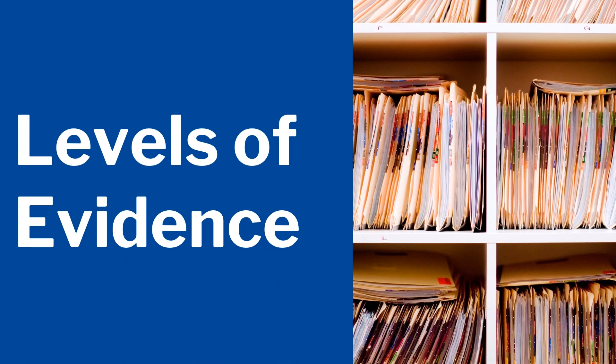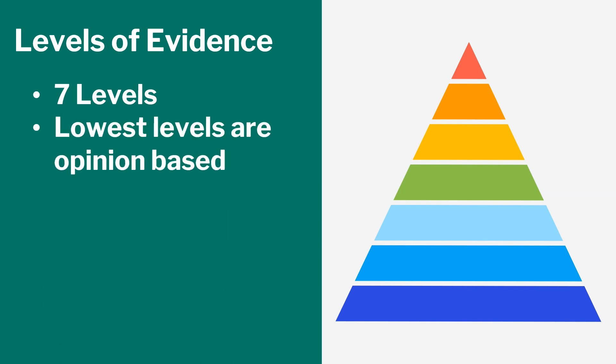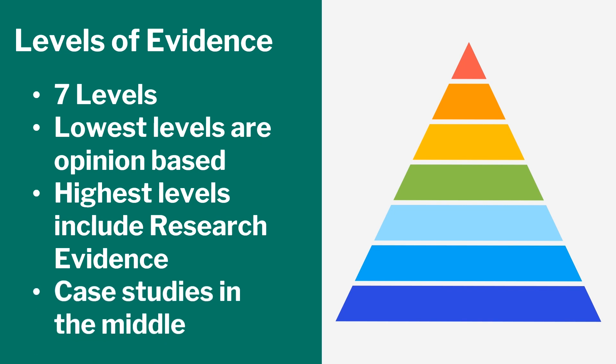Let's take a quick minute to look at levels of evidence when reviewing research articles. While there are many ways to conduct research studies, not all of them carry the same weight as others. There are seven levels of evidence that healthcare students and professionals can use to evaluate what they are looking at. At the lowest level, we have opinion-based research — think four out of five dentists recommend this particular brand of gum. At the highest levels, you will find research-based evidence. These will often involve meta-analysis or systematic reviews. These studies review available evidence and seek to answer a clinical question. You will find case studies throughout the middle levels based on what methodologies those researchers used.